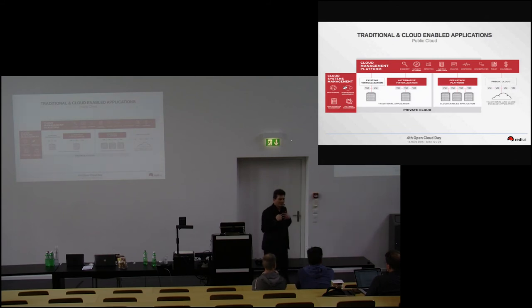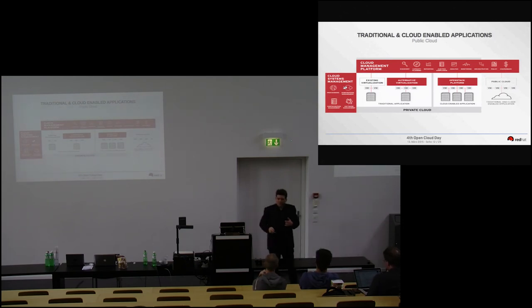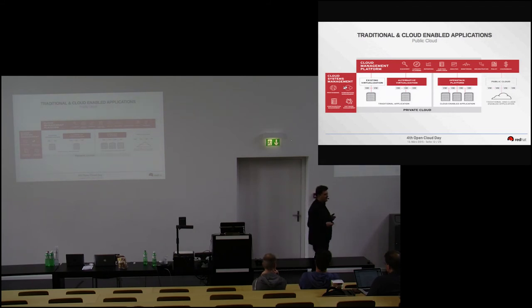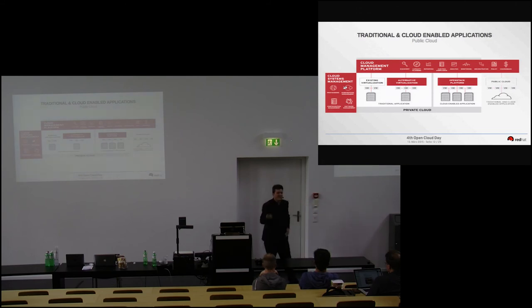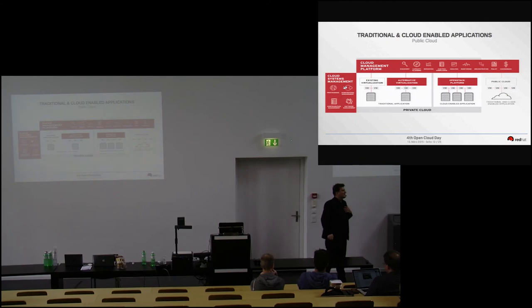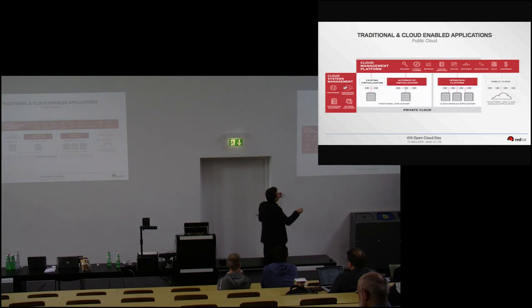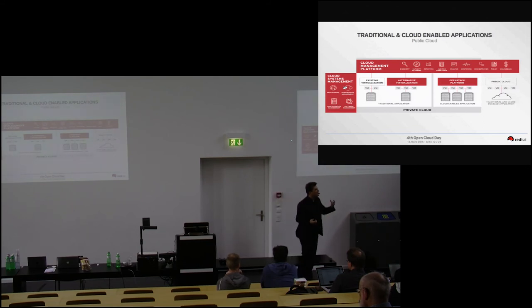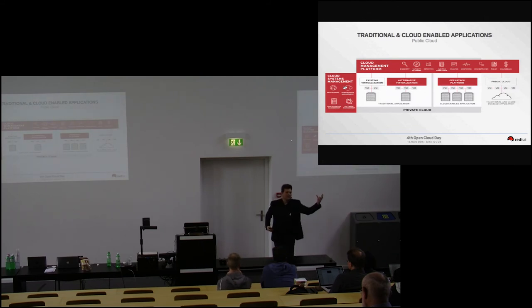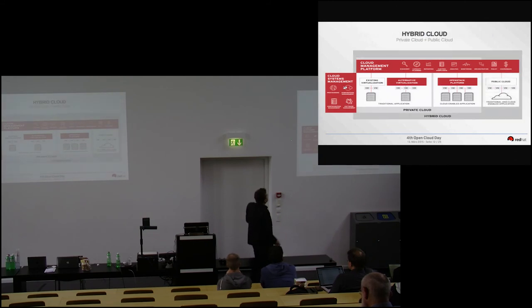The next step is cloud brokering — integrating external services. Many developer departments go directly to Amazon because it's much faster deploying VMs there than through their own IT. You don't want them buying VMs on a personal credit card. A cloud management software needs to be able to charge Amazon resources to the company's account and give developers controlled allowance to access Amazon, Google, or other cloud resources. Combining on-premise and public cloud is what we call hybrid cloud.